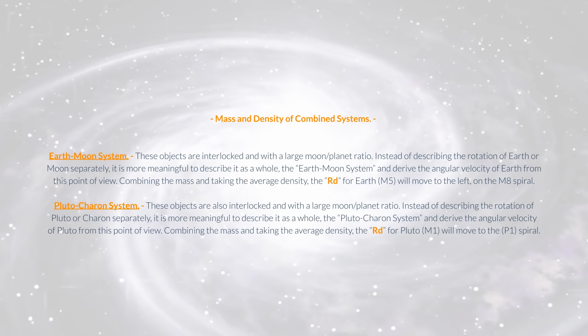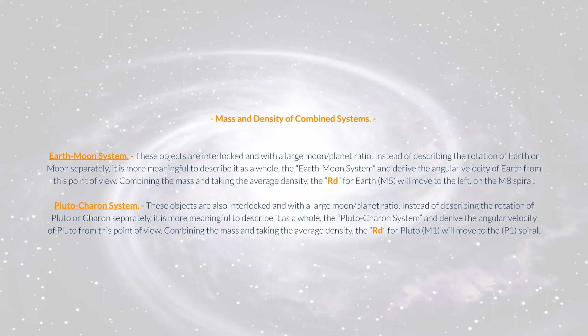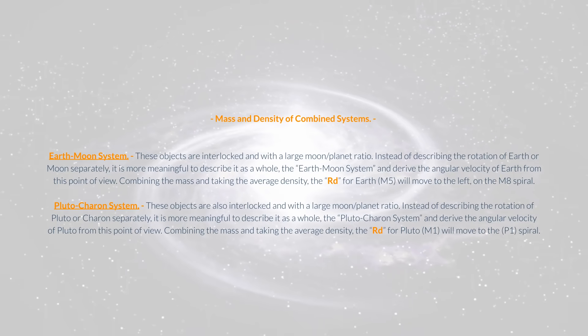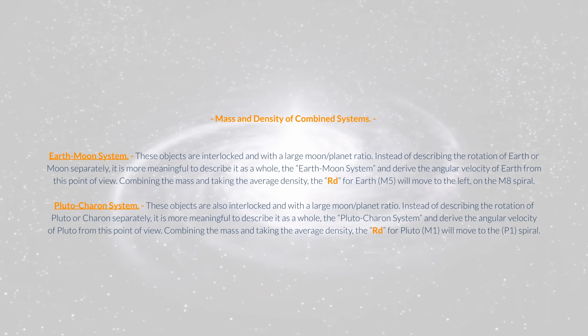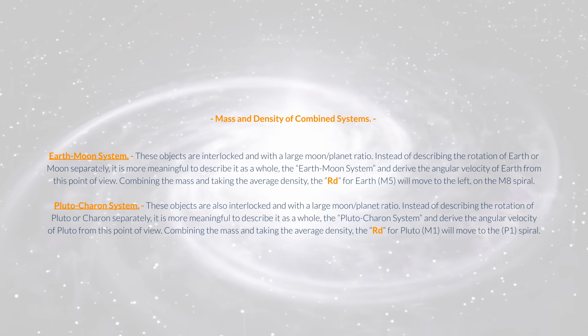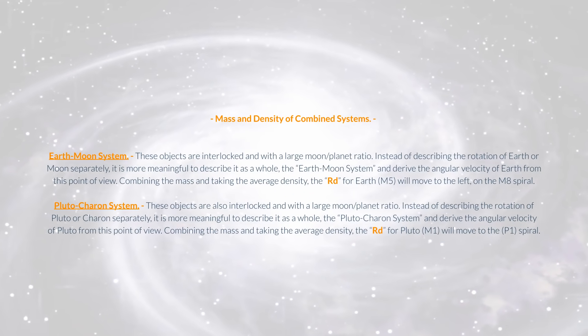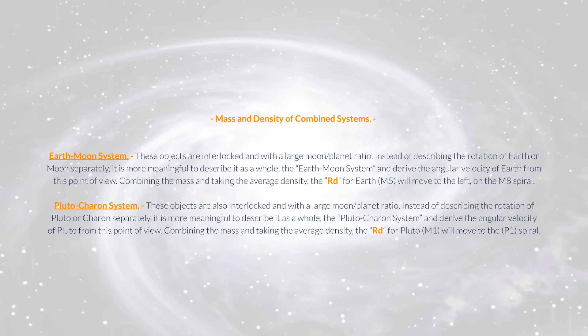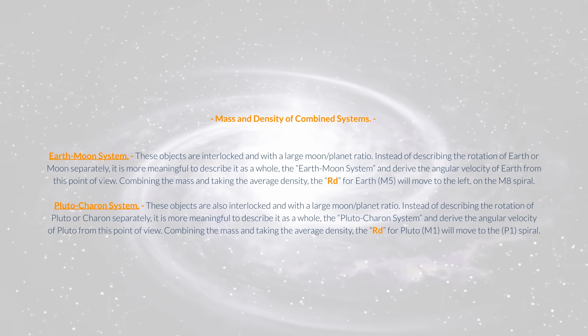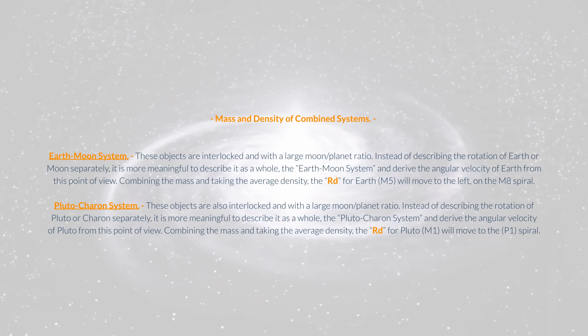Mass and Density of Combined Systems. Earth-Moon System. These objects are interlocked and with a large moon-planet ratio. Instead of describing the rotation of Earth or Moon separately, it is more meaningful to describe it as a whole, the Earth-Moon system, and derive the angular velocity of Earth from this point of view. Combining the mass and taking the average density, the Rd for Earth, M5, will move to the left, on the M8 spiral.